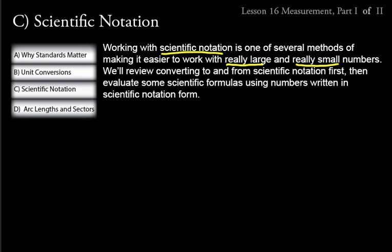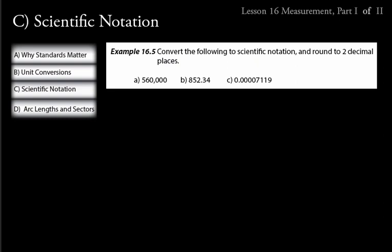Look at example 16.5: convert these numbers to scientific notation, rounding to two decimal places when done. In A, pretend there's a decimal point at the end of the number and move it to the left of the first non-zero digit — that's one, two, three, four, five places. So we'll write 5.60 times 10 to the fifth.